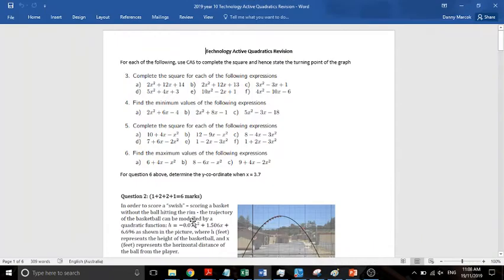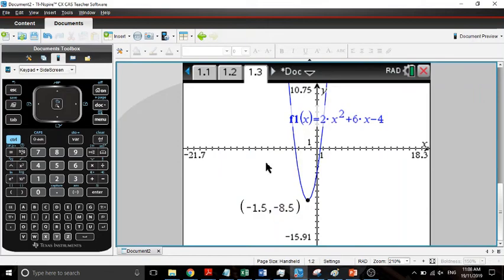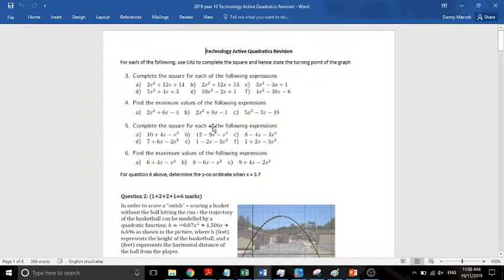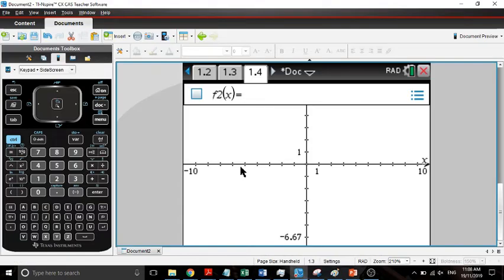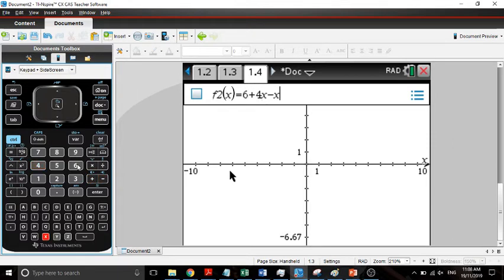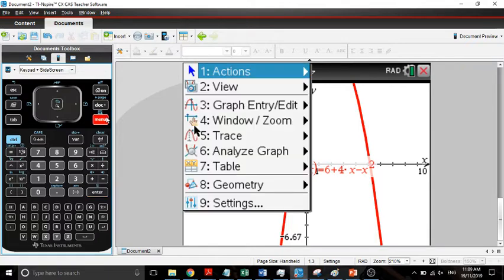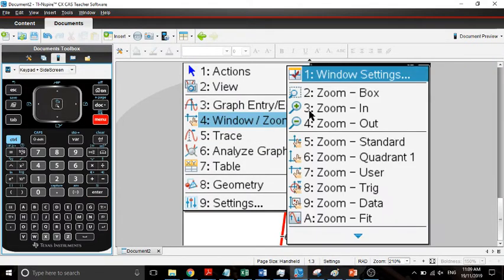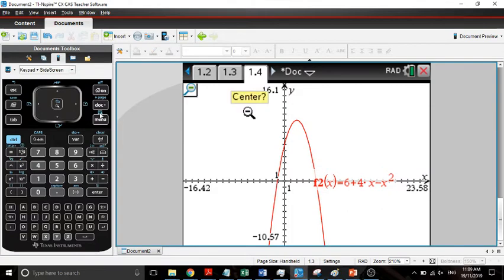For the next one we'd complete the square, do all the same as before. Now to find the maximum values, what we do is we graph them and we go through the same way. So let's see, we're going to find the maximum. Let's go to a new graphing page and we are going to graph 6 plus 4x minus x squared. Let's graph that. We can see that's what our graph does.